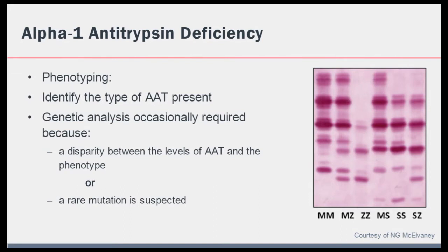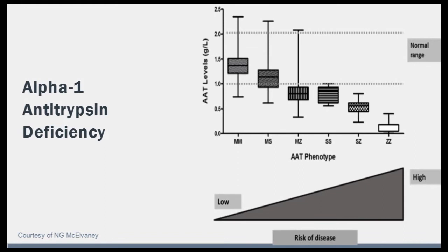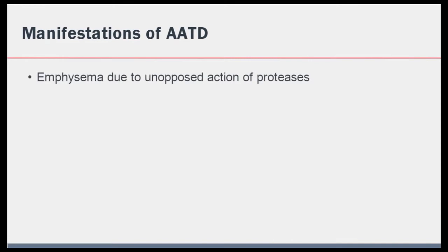Depending on the phenotype and level of alpha-1 antitrypsin, there is a correlation with increased risk of lung disease. The most severe form of alpha-1 antitrypsin deficiency is the ZZ phenotype, and this presents as emphysema as early as in the third decade of life. Alpha-1 antitrypsin deficiency is a systemic disorder with numerous manifestations. The most common manifestation is early-onset emphysema, which is panacinar in nature, and there is a disproportionate involvement of the lung bases.